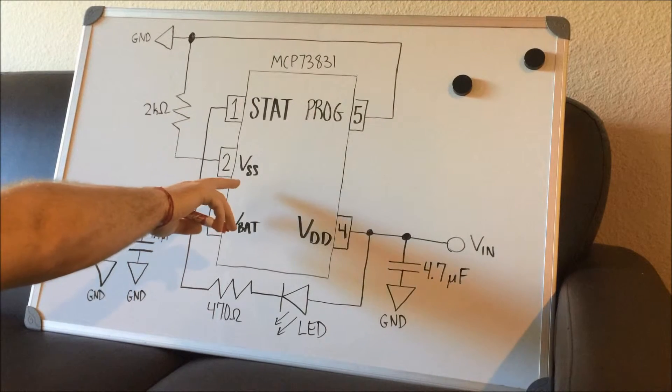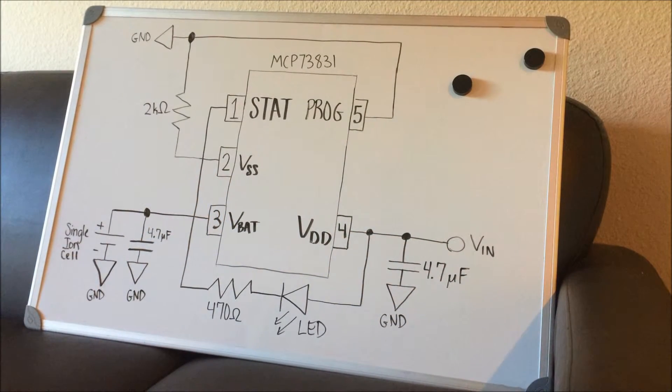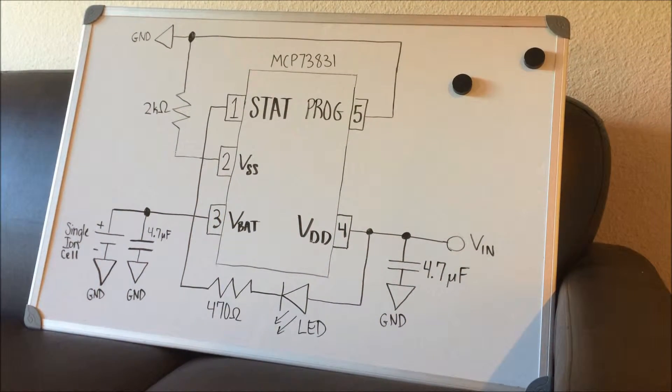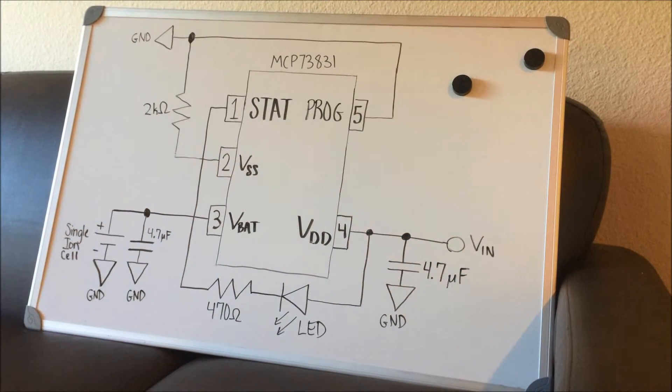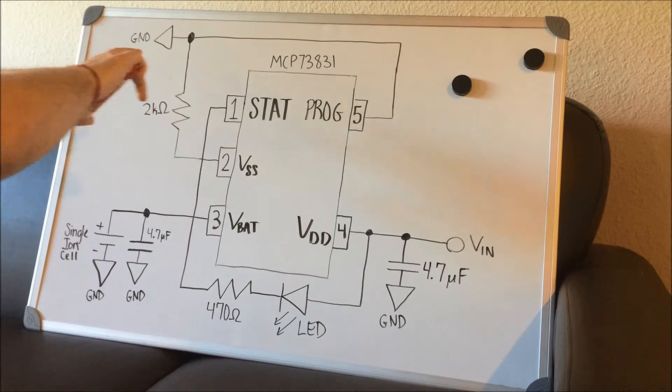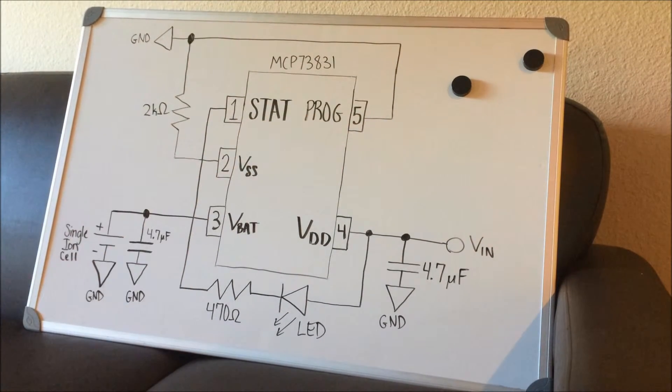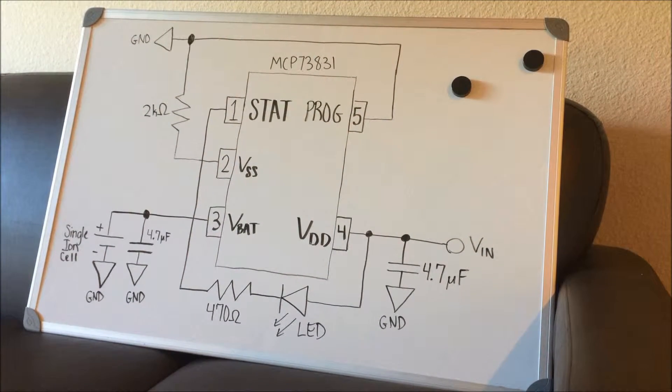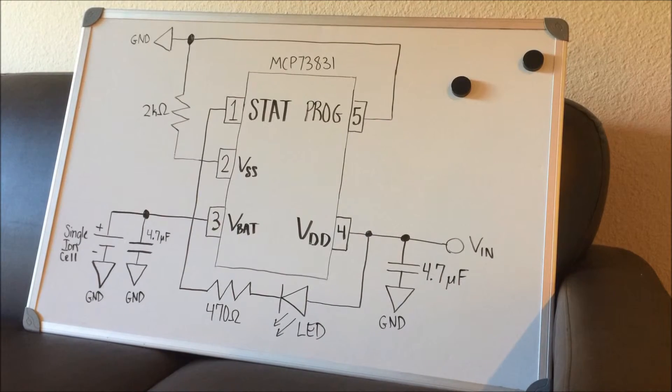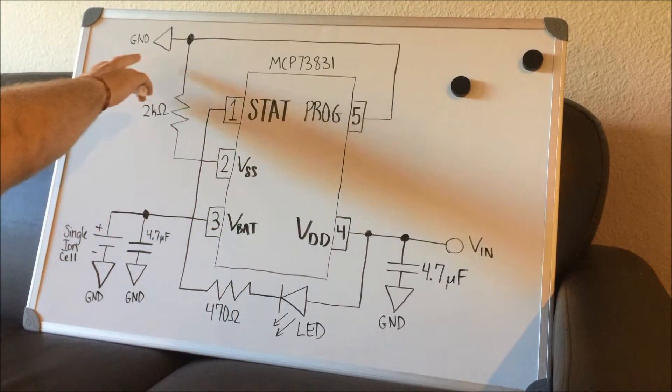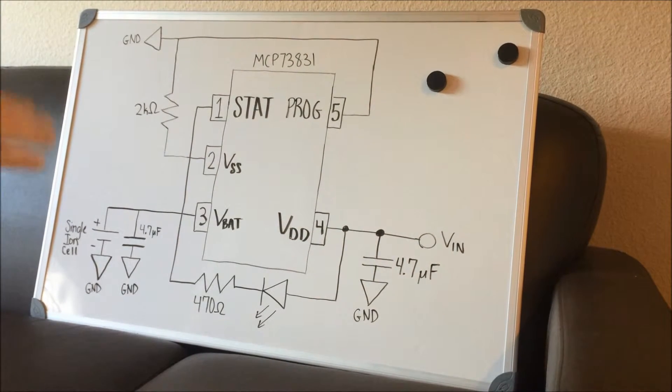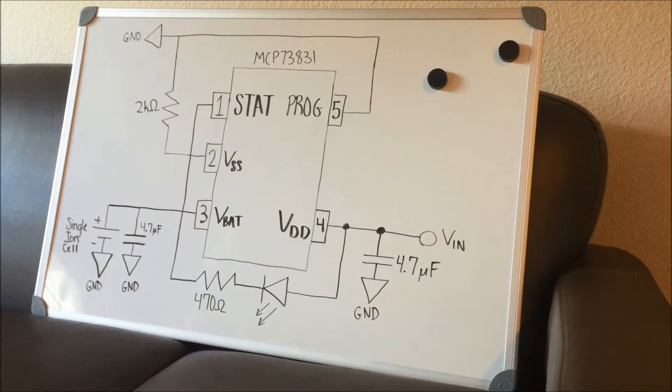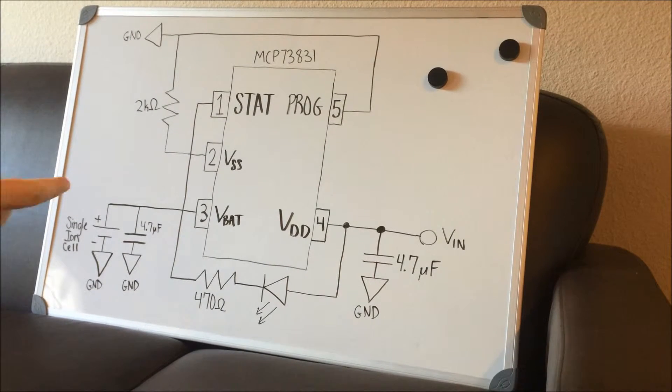The next part of this circuit is VSS. That is the reference pin, which goes up to the 2 kilo ohm resistor, which also goes to the PROG pin, which is the charge regulation set. And that also right there connects to ground. Depending on whatever this resistance is, it determines the current that flows through. Ours is 500 milliamps with this calculation.